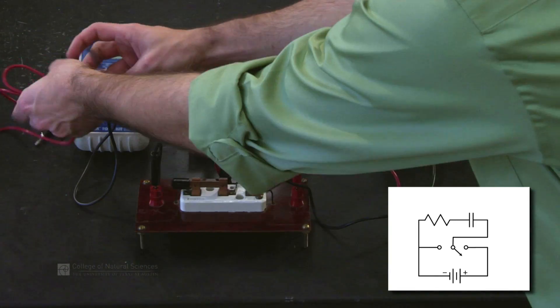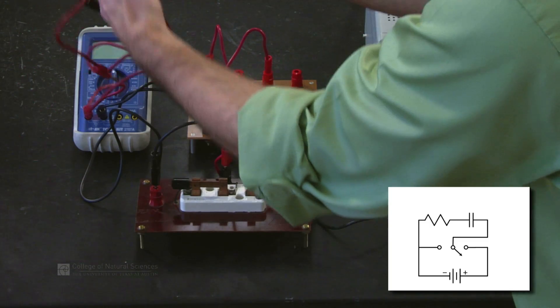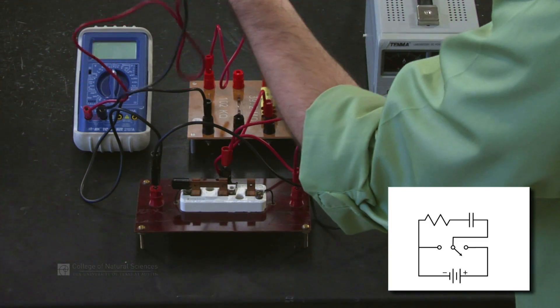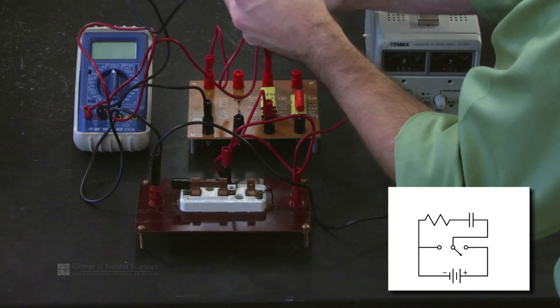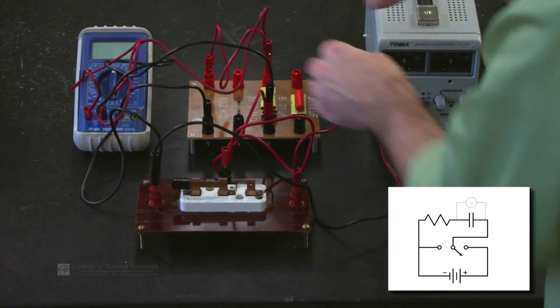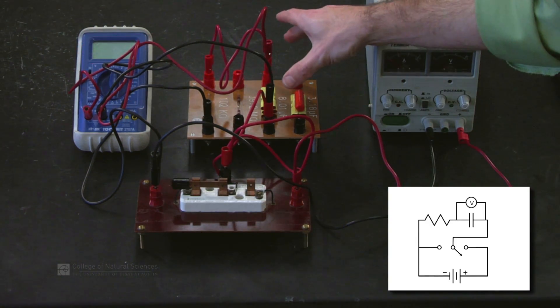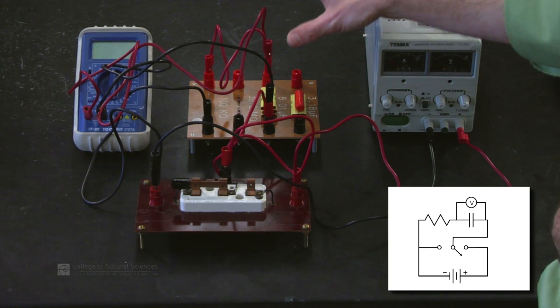All we have to do now is connect our multimeter or whatever we're going to be measuring the voltage with, or if we're measuring current, the amp meter. In this case we're going to connect our multimeter across the capacitor.